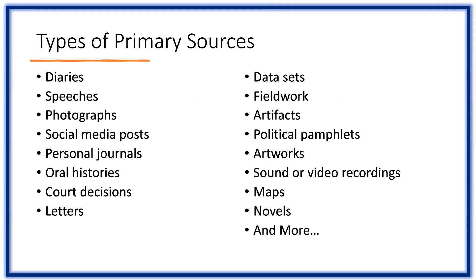A new or updated form of a primary source can still be used as a primary source. For example, the text of the Declaration of Independence that you find on Wikipedia contains the same information as the original document, and you are still able to analyze it as you would any primary source.